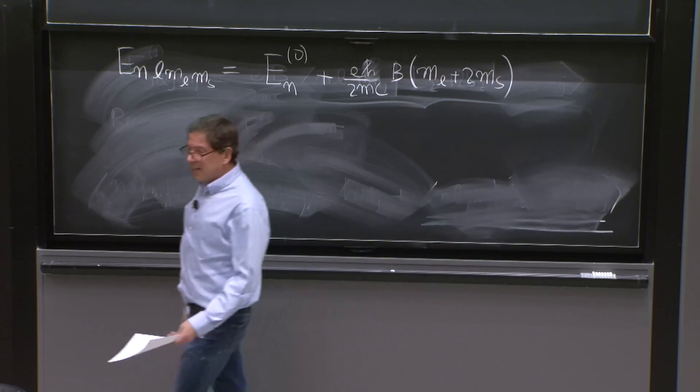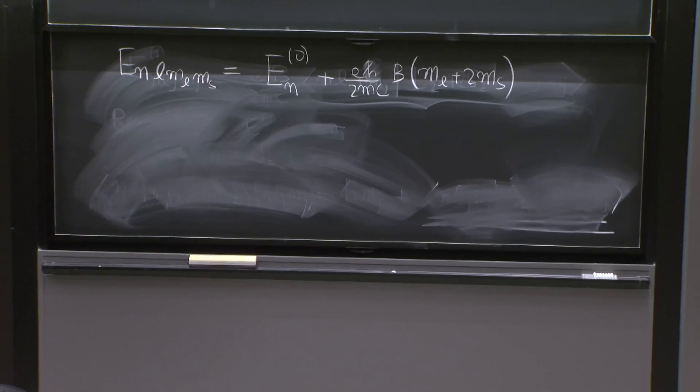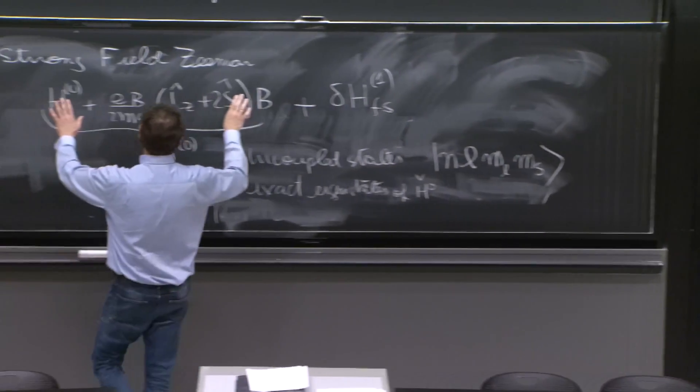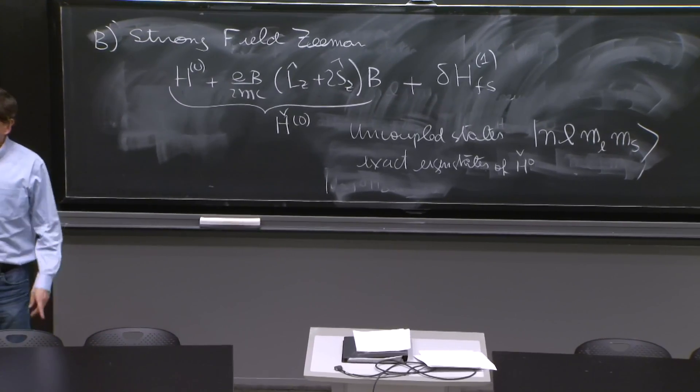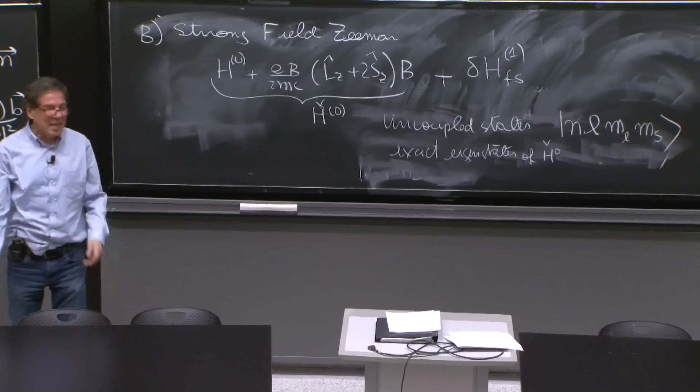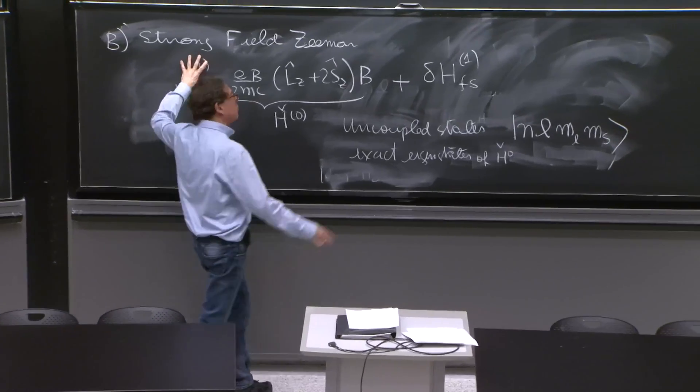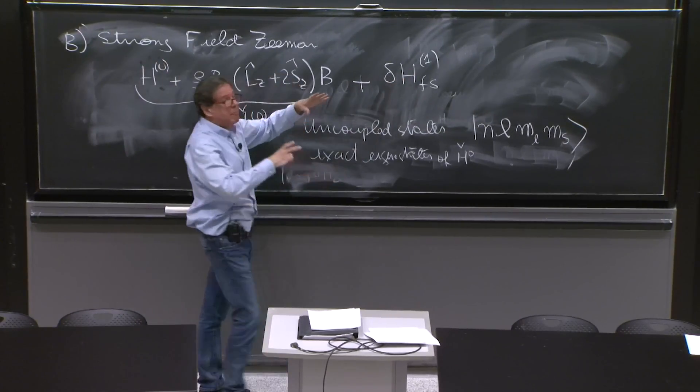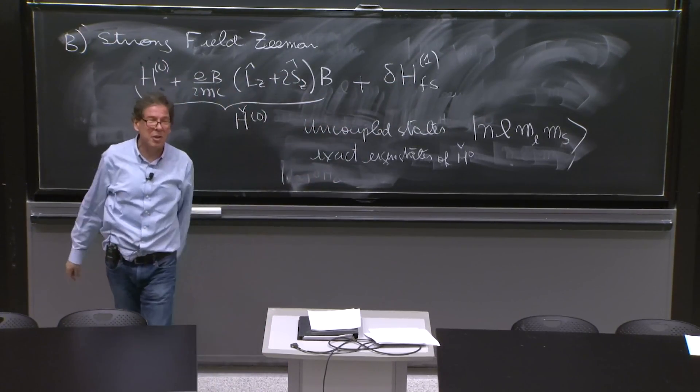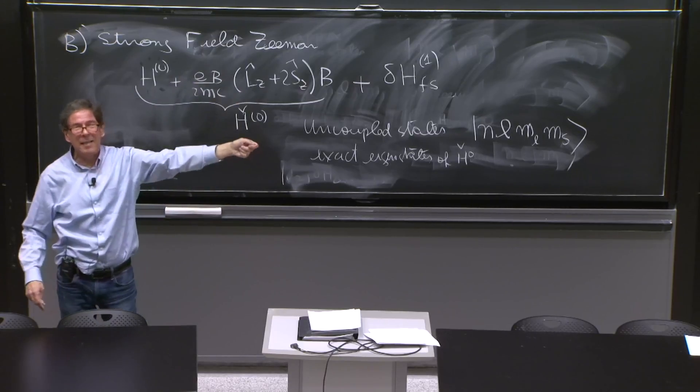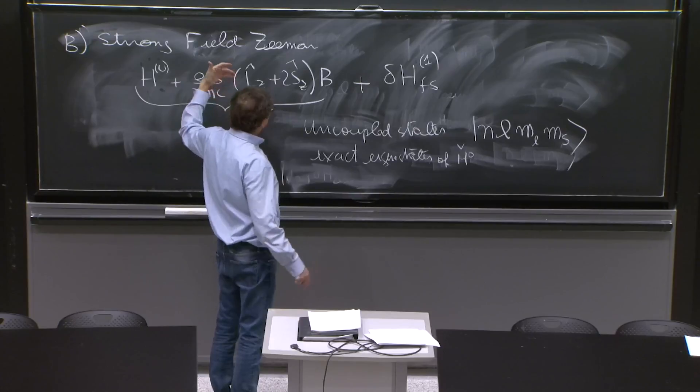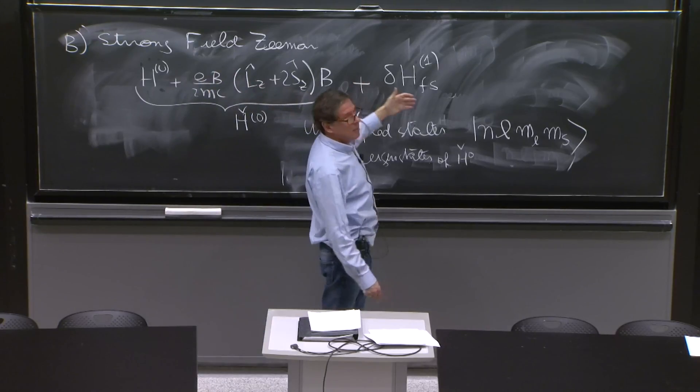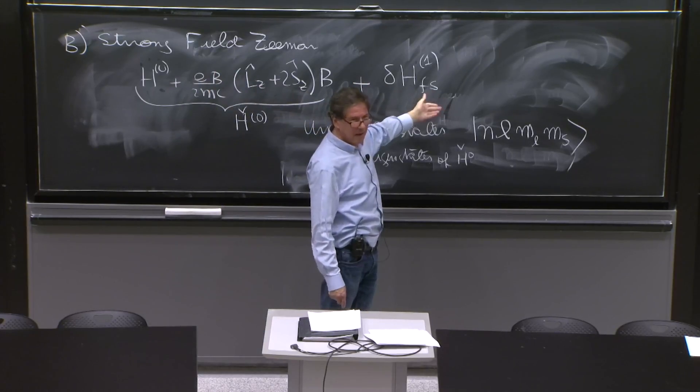So this deserves perfectly the name of known Hamiltonian. That was not the case for weak Zeeman. In weak Zeeman, we had this one and this one. And that was the approximately known Hamiltonian to which we added the weak Zeeman. Here it's this perfectly known Hamiltonian to which we have to now add fine structure.